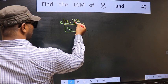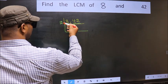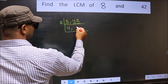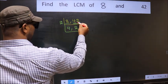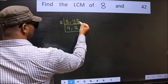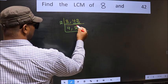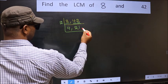First number is now 4. When do we get 4 in the 2 table? 2 times 2 is 4. Now the other number becomes 21. When do we get 2 in the 2 table? 2 times 1 is 2.